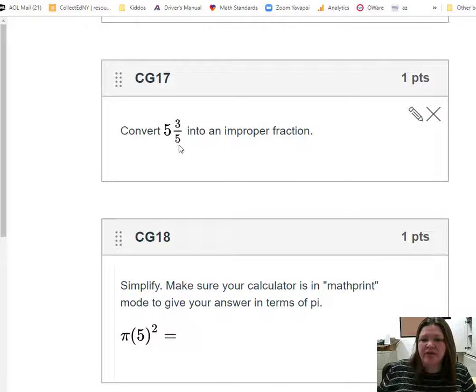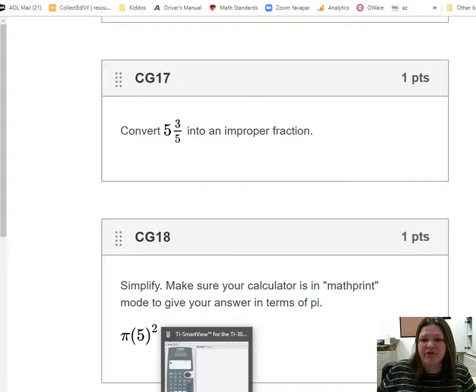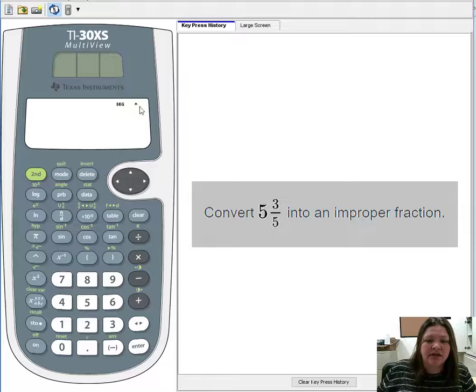There's my last one. Convert 5 and 3/5 into an improper fraction. Let's give it a try. Okay, so this time I want to input a mixed number, not a fraction. So I don't need the n/d button. I need the u n/d button. That's written in green right above. So anytime I want something in green, I hit second.